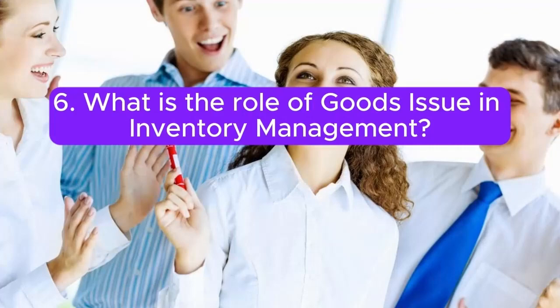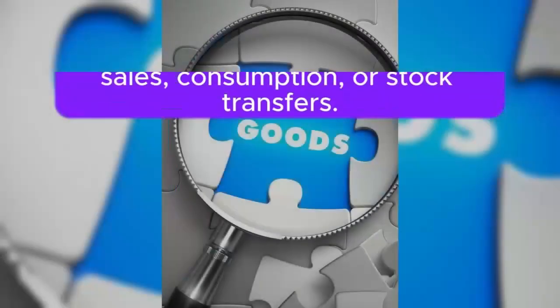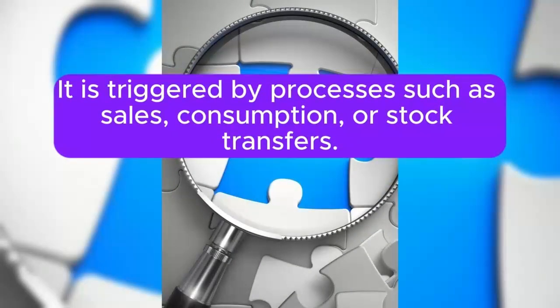Question 6: What is the role of goods issue in inventory management? Answer: Goods issue involves the removal of materials from the inventory. It is triggered by processes such as sales, consumption, or stock transfers.